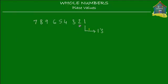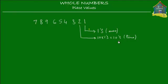How about 2? Well, 2 is in a place that's 10 times more important than the 1's place. So 10 times the 1's place — 10 times 1 — is the 10's place. So 2 is in the 10's place. Its value is 2 times 10, and 2 times 10 is 20, so its value is 20.